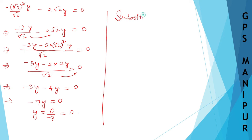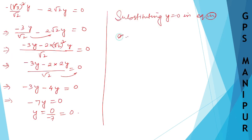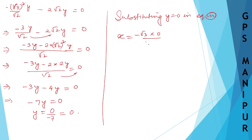Substituting y equals 0 into equation number 3, we have x equals minus root 3 into 0 divided by root 2. Since minus root 3 into 0 is 0, everything is 0. Therefore x equals 0 and y equals 0.